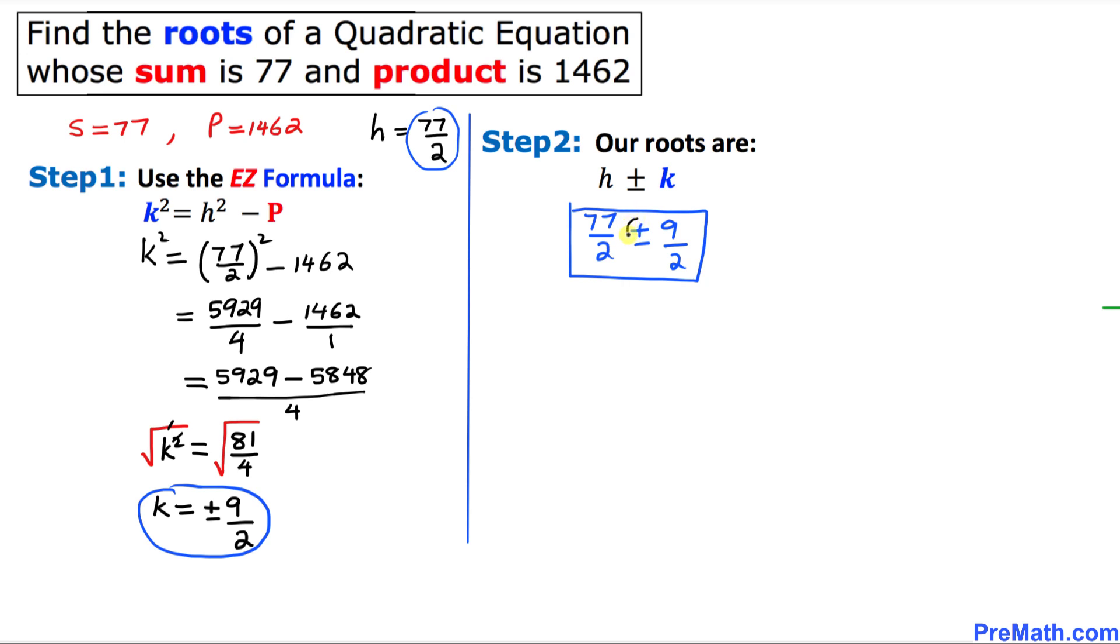And now finally we are going to split these signs. So that is going to give us 77 divided by 2, first with a plus sign, 9 divided by 2, and the other one is going to be 77 divided by 2 minus 9 over 2. Let's simplify them. 2 is our common denominator. 77 plus 9 is going to give us 86 divided by 2. That means one of the solution is 43.